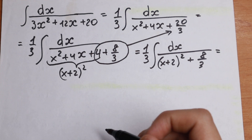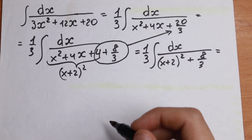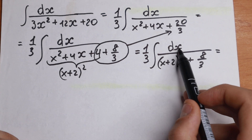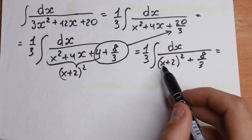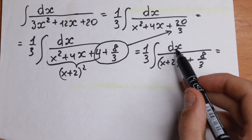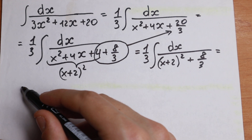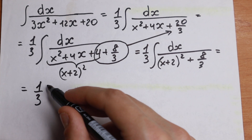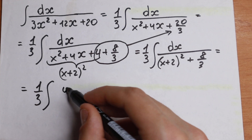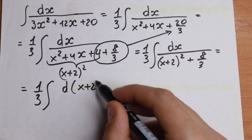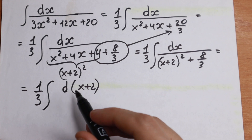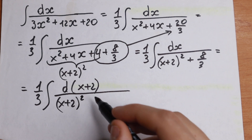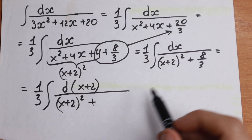There is a formula in higher mathematics for this form. To use it, we need the differential to match the expression inside the square. Right here we have x plus 2 in the denominator, so instead of dx we can write d(x plus 2), because the derivative of x plus 2 is 1 — so nothing changes. We now have 1 third times the integral of d(x plus 2) over (x plus 2) squared plus 8 thirds.